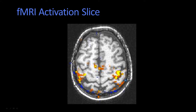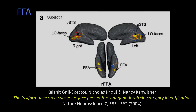One of the areas that people were studying a lot and arguing about was whether there was a part of the brain that seemed very responsive to faces. It's called the fusiform face area. It's a little bit controversial as to whether it really responds to just faces or other sorts of patterns. This is a paper from 2004.